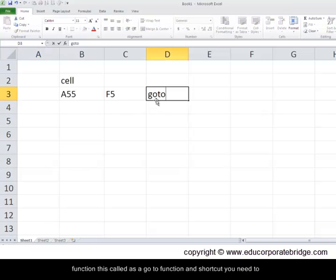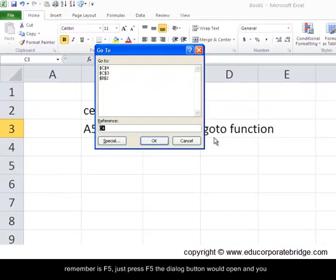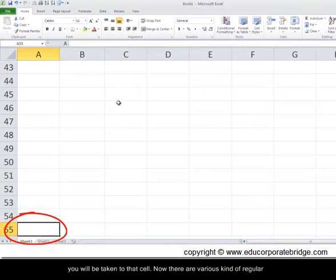This is called a go to function and the shortcut you need to remember is F5. Just press F5, the dialog button will open and you need to type whichever cell you want to go and you can press OK and you will be taken to that cell.